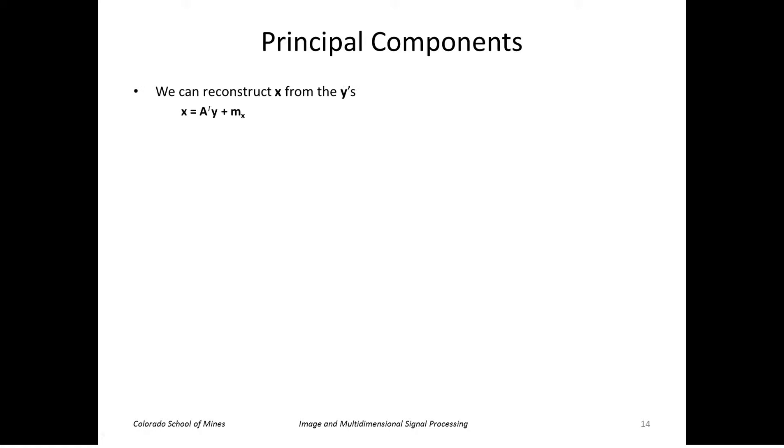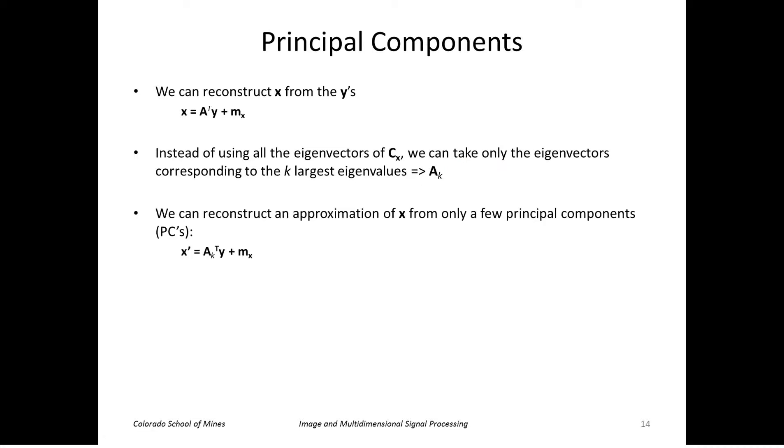We can reconstruct x from the y's using this equation that we've seen. But let's look at using only a subset of the eigenvalues and eigenvectors. We've sorted the eigenvalues and eigenvectors from largest to smallest. Let's take the first k of them, namely the k largest eigenvalues, and we'll create a matrix A sub k that has the first k rows of A.